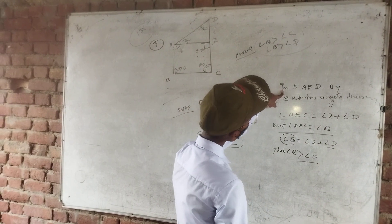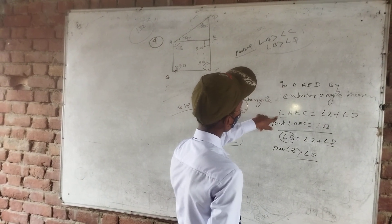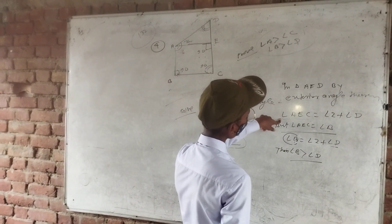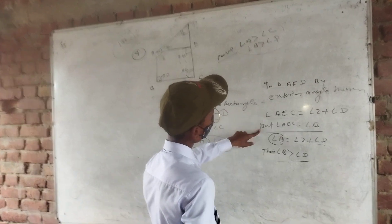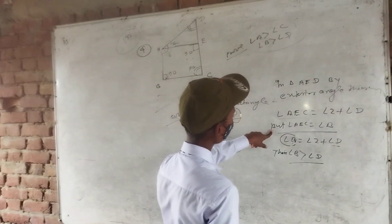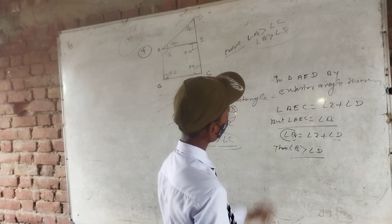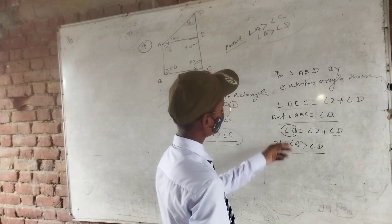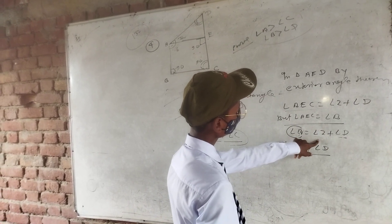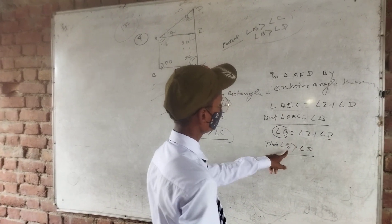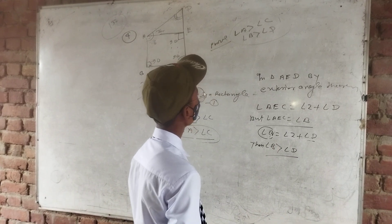Angle ATC is equal to angle 2 plus angle D. But angle ATC is equal to angle B, so angle B equals angle 2 plus angle D, which is greater than angle D.